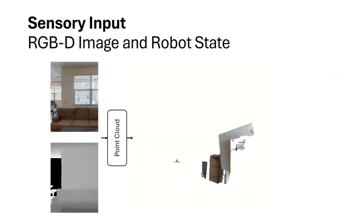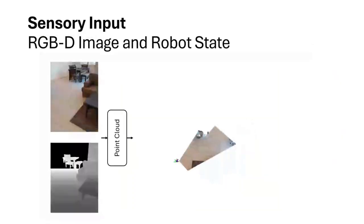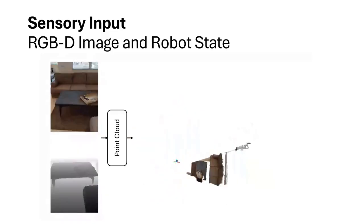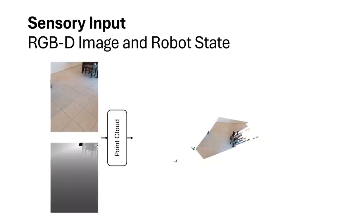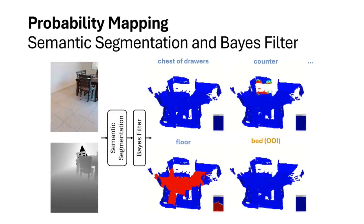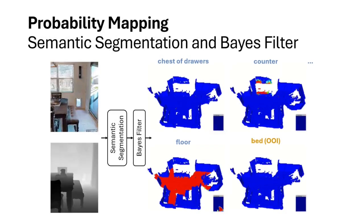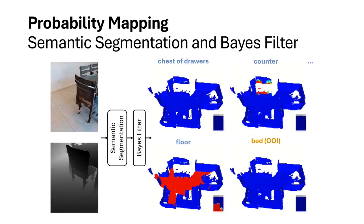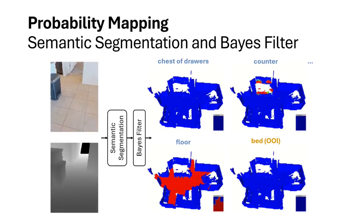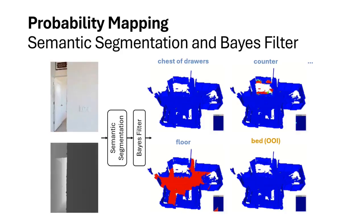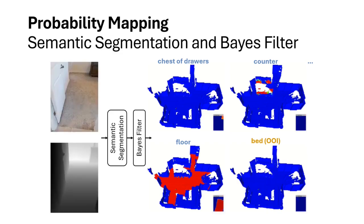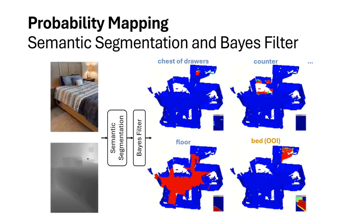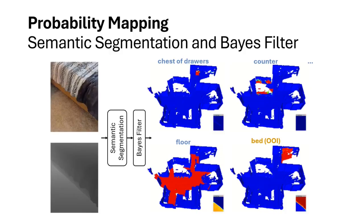Our method adheres to the standard inputs for object goal navigation: the RGBD image and the robot state. From the RGBD image, we perform semantic segmentation to create heat maps and use a Bayes filter to estimate the posterior probability of each voxel belonging to different categories. These include the object of interest — in this case, a bed — and common objects such as floor, chest of drawers, and counters.